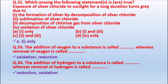Question 32: Which among the following statements is true? Exposure of silver chloride to sunlight for a long duration turns gray due to — formation of silver by decomposition of silver chloride; sublimation of silver chloride; decomposition of chlorine gas from silver chloride; or oxidation of silver chloride.